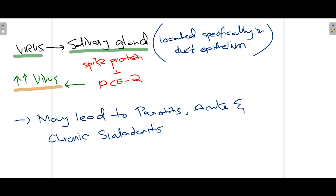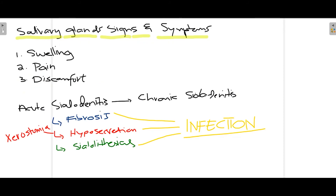These ACE2 receptors are present in the ductal epithelium of the salivary gland, as the ducts are lined by epithelium on which these receptors are found. The mechanism is similar: the spike proteins of coronavirus bind to the ACE2 receptor, leading to increased viral replication and affecting the salivary gland. This may lead to parotitis — inflammation of the parotid gland — and acute or chronic sialadenitis, meaning inflammation of the salivary glands, which can involve the submandibular and sublingual glands.